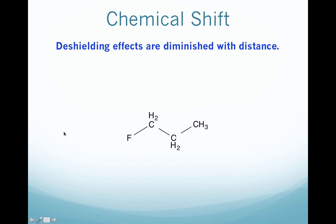How does an electronegative atom affect a chain? This effect diminishes rapidly with distance. Here we have electronegative fluorine directly bonded to a carbon, so those protons feel a really strong effect and are at 4.3 parts per million. Moving one more carbon over, there's not nearly as substantial an electron withdrawing effect, so that drops to about 1.7 parts per million. And one more carbon atom out, the CH3 protons are going to have hardly any effect from that fluorine — about 1 part per million.